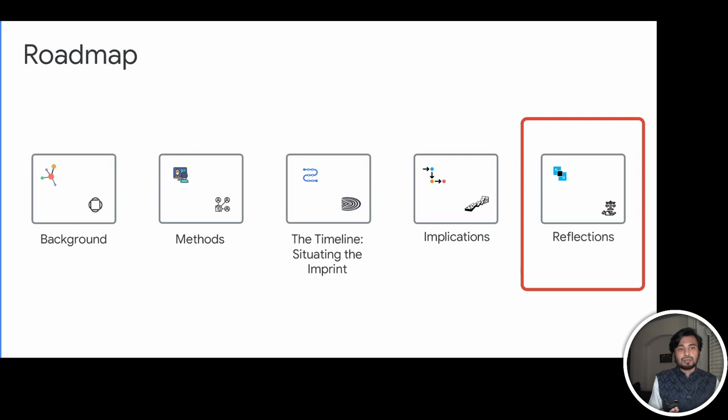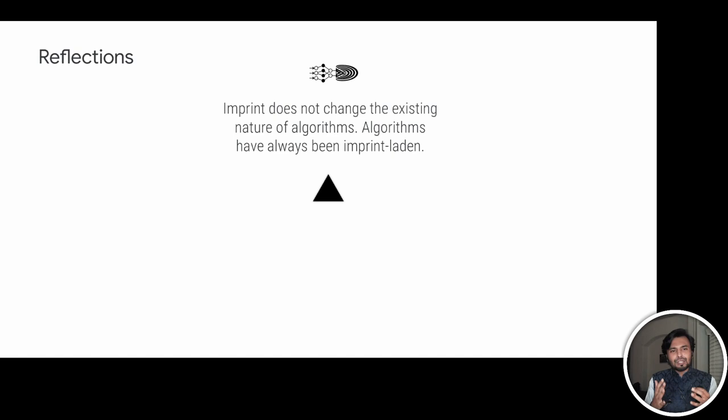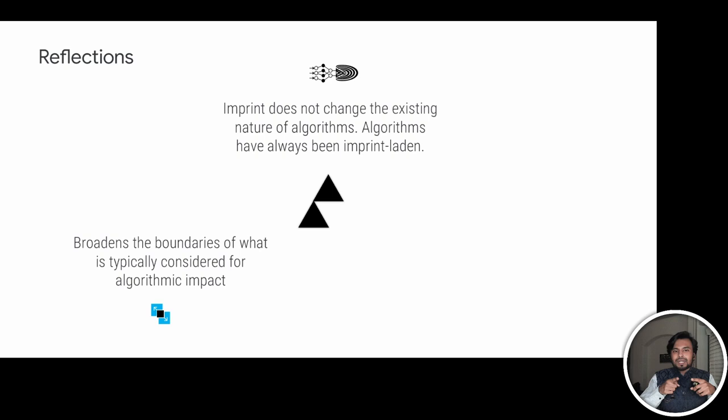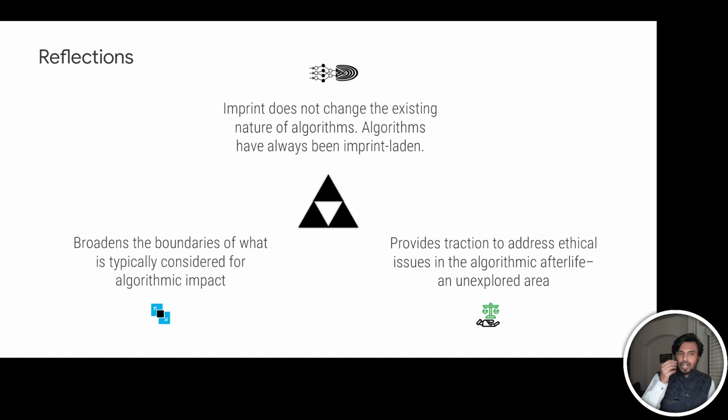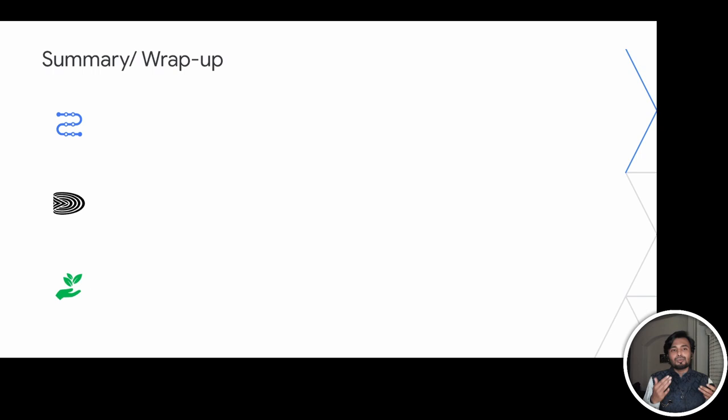Finally, we'd like to share some reflections. First, the concept of the imprint doesn't change the existing nature of algorithms — algorithms have always been imprint-laden. Second, it helps us broaden what is typically considered for algorithmic impact. Third, it provides traction to ethical issues in the algorithm's afterlife — an unexplored area thus far — allowing us to see things that we wouldn't have been able to see before.